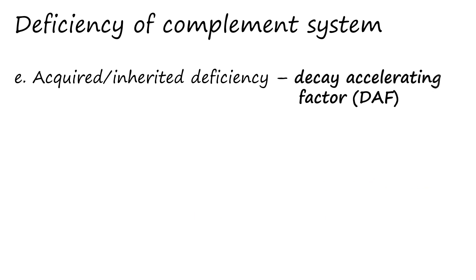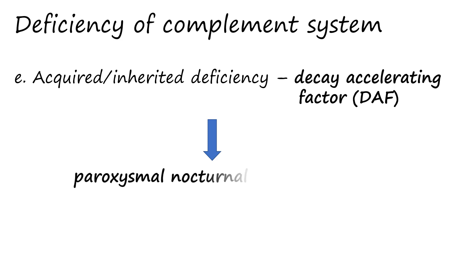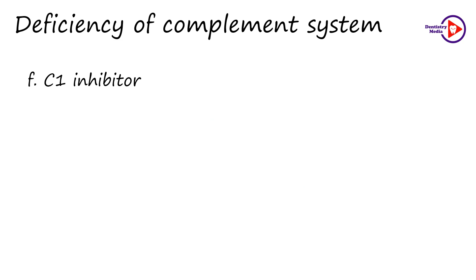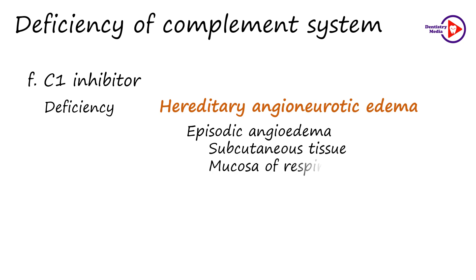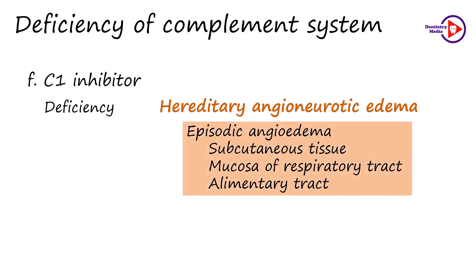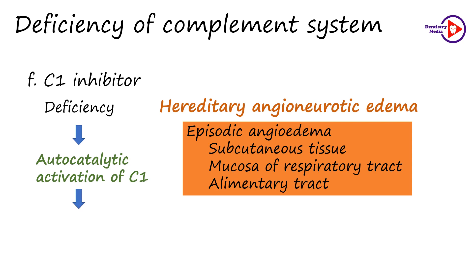The decay-accelerating factor is an inactivator of the MAC complex. Therefore, acquired or inherited deficiency of the decay-accelerating factor results in increased MAC complex activity, leading to increased complement-mediated lysis particularly of red blood cells, that is hemolysis, and clinically this appears as the disorder paroxysmal nocturnal hemoglobinuria. The C1 inhibitor has an important role in complement regulation, and its deficiency causes a condition called hereditary angioneurotic edema, which is an autosomal dominant clinical condition. It is characterized by episodic angioedema of the subcutaneous tissue or mucosa of the respiratory tract or alimentary tract, and it is a non-pitting type of edema. The deficiency of C1 inhibitor leads to autocatalytic activation of C1, causing unrestrained breakdown of C4 and C2. Since C2 has kinin-like activity, it is the main mediator of the edema.